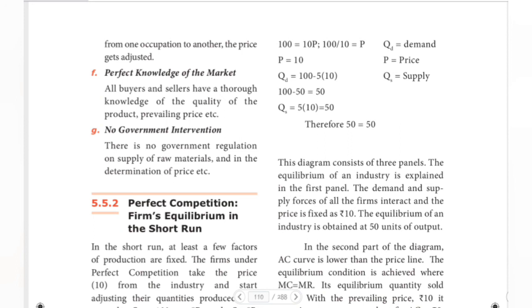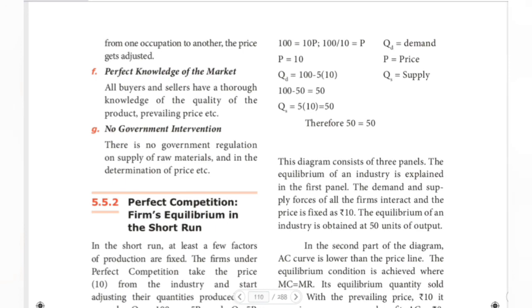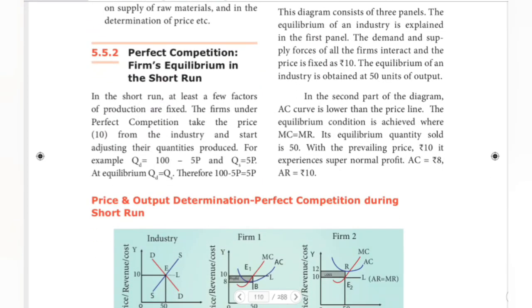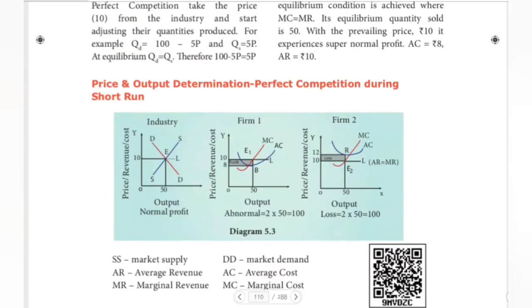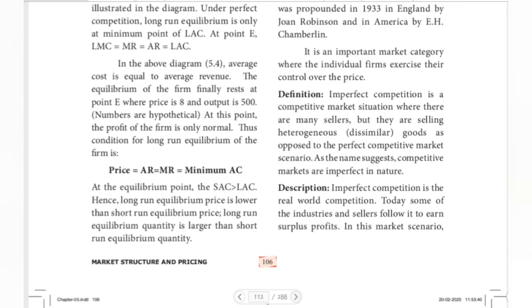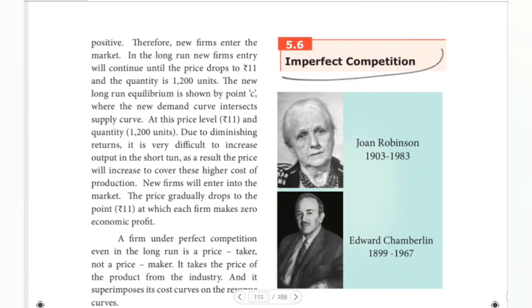There is no government regulation on the supply of raw materials. If you look at price determination, there is no government intervention. These are the features of perfect competition. Next, we will look at firm equilibrium. We will see you all in the next video. Until then, stay tuned. Bye!